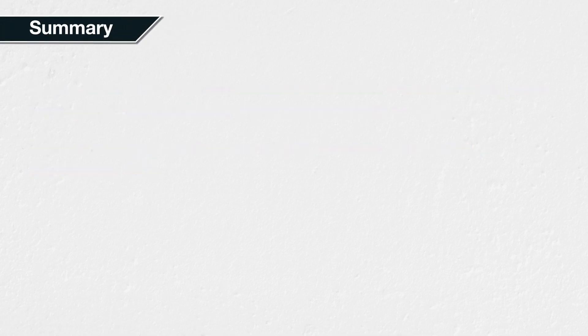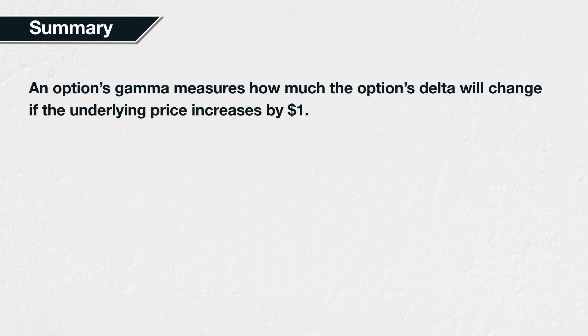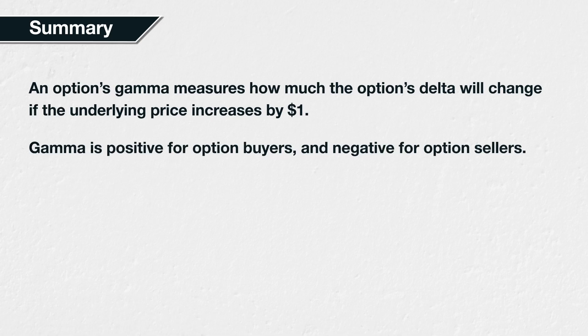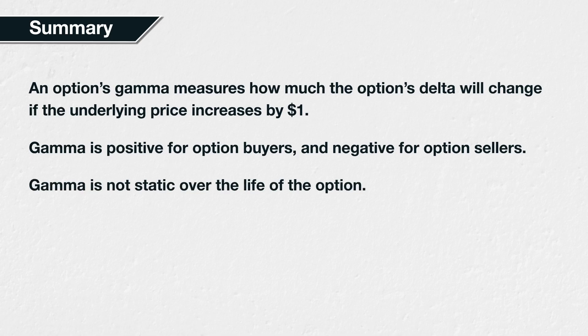In summary, an option's gamma tells you how much the option's delta is expected to change if the underlying price increases by $1, assuming that everything else, like implied volatility and time to expiry, remains the same. Option buyers have positive gamma, meaning their delta increases as the underlying price increases and decreases as the underlying price decreases. Option sellers have negative gamma, meaning their delta decreases as the underlying price increases and increases as the underlying price decreases. Gamma is not static over the life of the option — while gamma is the sensitivity of the option delta to changes in the underlying price, gamma itself has sensitivity to various parameters, which we will cover throughout the rest of this section.